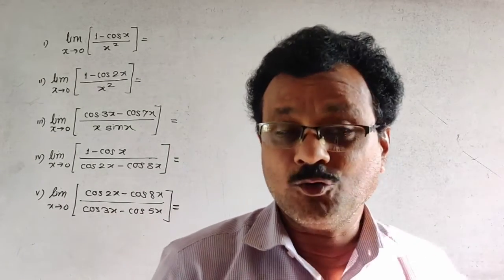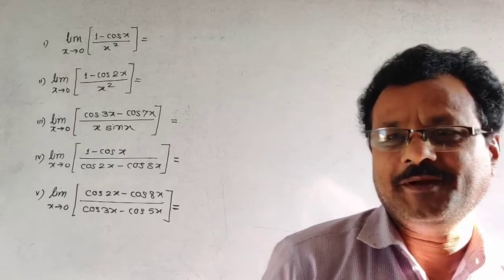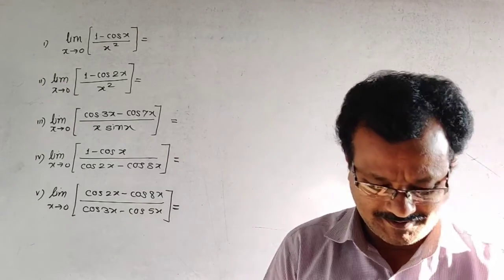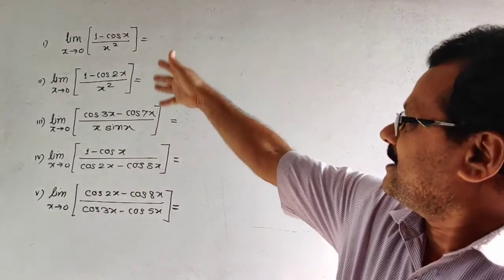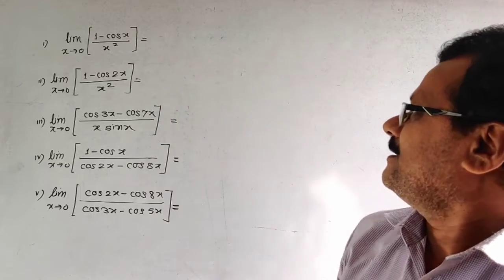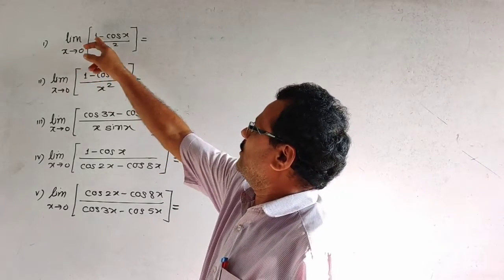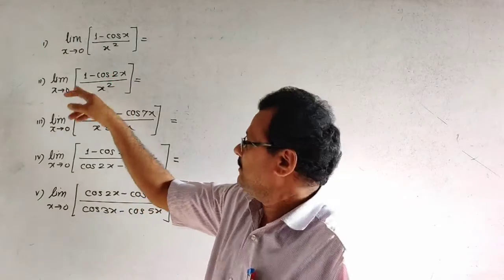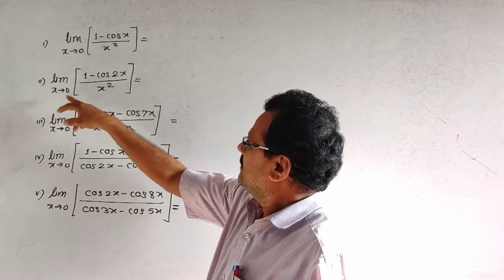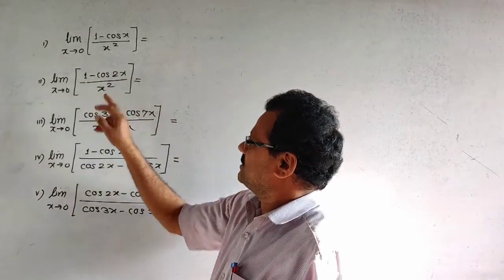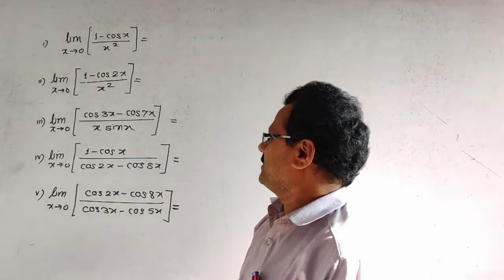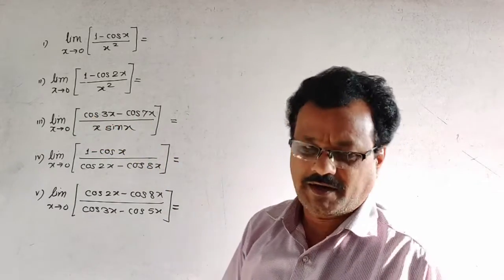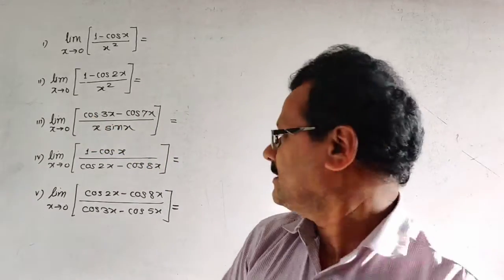How to find the limit of a given function in 5 seconds. Here, limit as x tends to 0 of (1 minus cos x) divided by x². Another example: limit as x tends to 0 of (cos 3x minus cos 7x) divided by x.